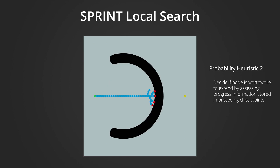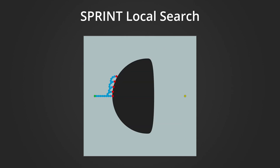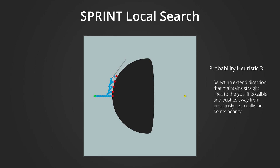If the search runs out of possible nodes to extend, it terminates and reports back to the global search that it was unable to form a connection. The job of probability heuristic 3 is to calculate a direction to extend toward. Probability heuristic 3 will favor moving in straight lines towards the goal if possible, but if the search has previously hit collision points, it will quickly access these nearby collision points stored in preceding checkpoints, and a probability gradient field will push the extend direction away from these previously seen collision points — trying to push the search towards regions with a higher probability of containing useful free space samples. Collision points in the half space behind the extend node are excluded from this collision gradient since they have already been passed.